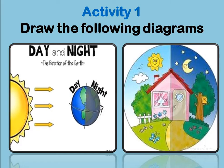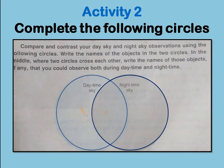This is activity one — you have to draw this diagram. You can take a screenshot right now and draw this diagram in your notebooks on the blank side. This is activity two, which is also in your book. You have to make a list of the things you can see in the daytime, write down the things you see in the nighttime sky only, and in the middle write the things you can observe during both daytime and nighttime.